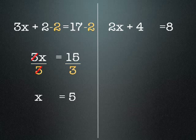Another equation: 2x plus 4 equals 8. So x is a number that's been multiplied by 2, had 4 added to it to make 8. We need to undo the steps that have been done to the x in the reverse order. So the first thing we need to undo is the plus 4. The opposite of plus 4 is minus 4, so we minus 4 from both sides of the equation. So 4 minus 4 cancels out, and the next line of our equation looks like 2x equals 4.